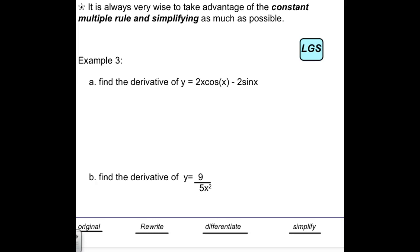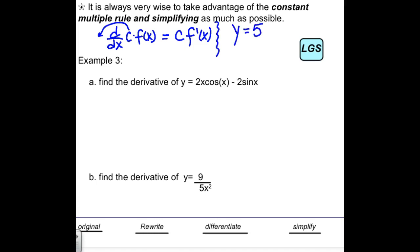We're always going to take advantage of the constant multiple rule: when you take the derivative of a constant times a function, you bring the constant out front and just take the derivative of the function. If y equals 5 times sine x, you might want to use the product rule, but the derivative of 5 is 0, so you just end up with 5 times the derivative of the function. When you have the product of a constant and a function, use the constant multiple rule.